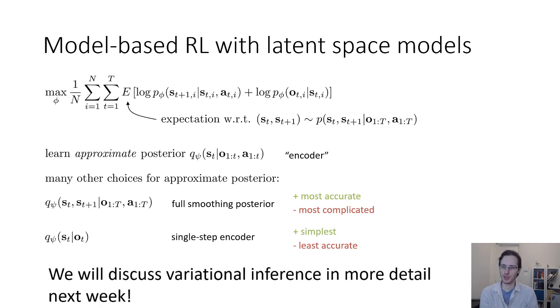Now, in terms of how to actually train these posteriors, this requires an understanding of something called variational inference, which we'll cover in more detail next week. I'll gloss over how to train these probabilistic encoders in this lecture, and I'll instead focus on a very simple limiting case of the single step encoder.